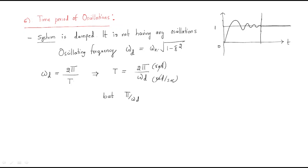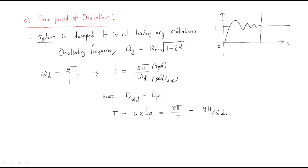Since π/ωd equals the peak time Tp (already discussed), substituting gives the total time period as T = 2Tp — that is, two peak times equal the total time period of oscillations. The formula is T = 2π/ωd.